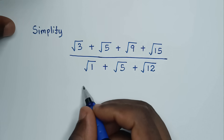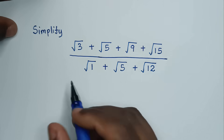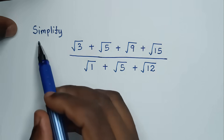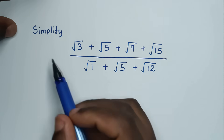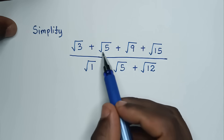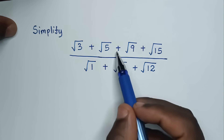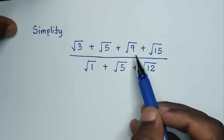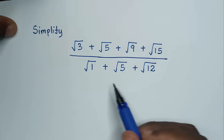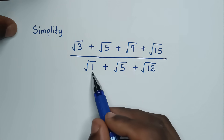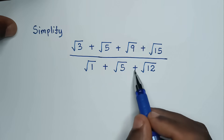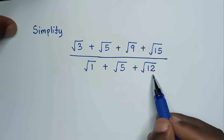Hello, you are welcome to solve this math problem: simplify the square root of 3 plus square root of 5 plus square root of 9 plus square root of 15, over square root of 1 plus square root of 5 plus square root of 12.